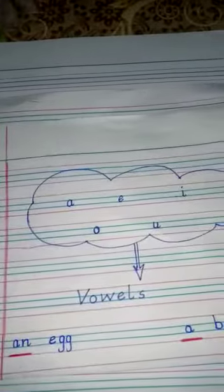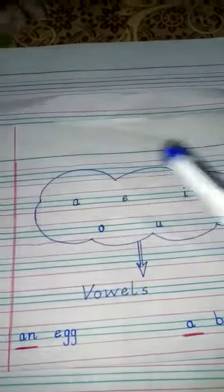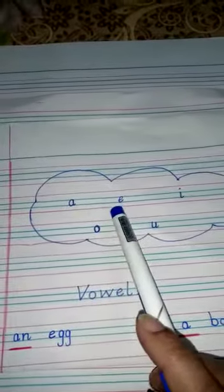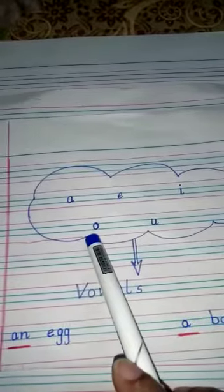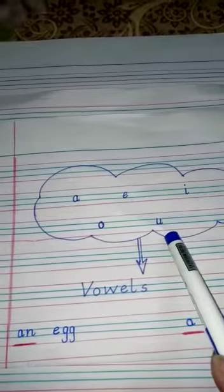Do you know how many vowels are there? There are five vowels and they are A, E, I, O, U.